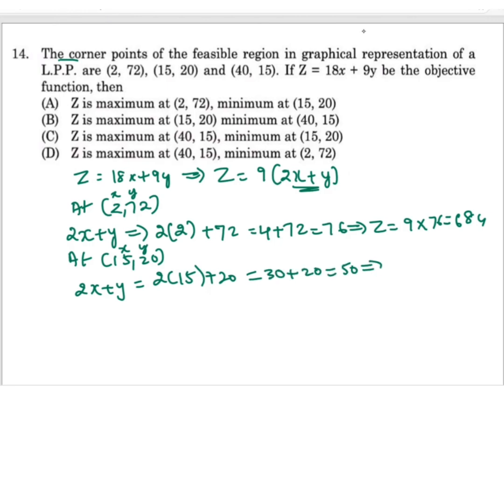30 plus 20 will be 50. Now 50, that will be Z will be 9 times 50. 9 times 5 is 45, that will be 450.